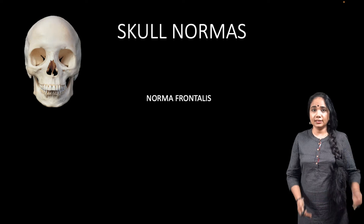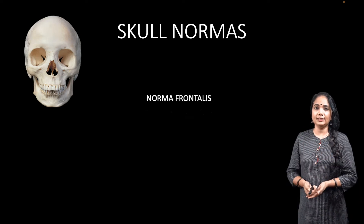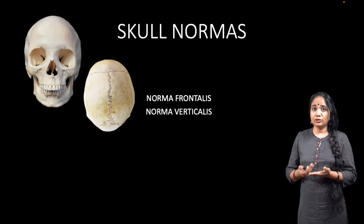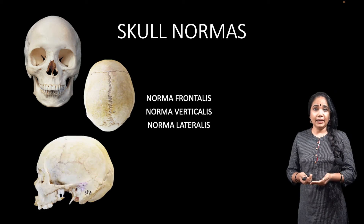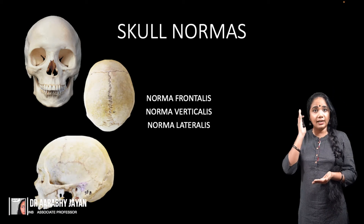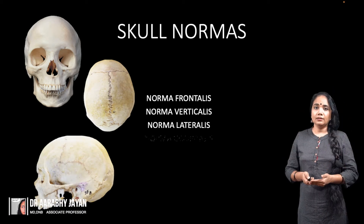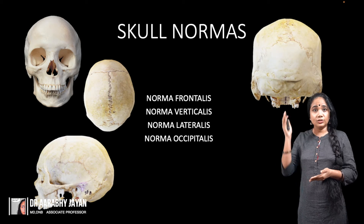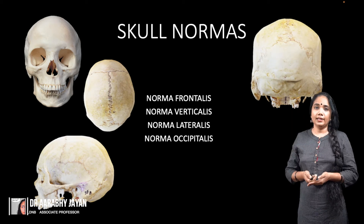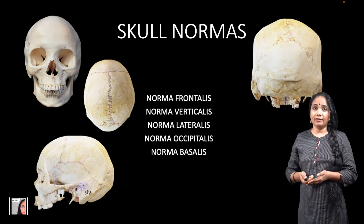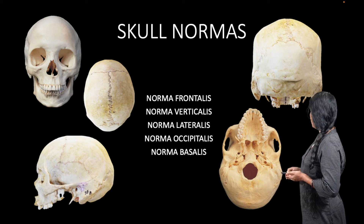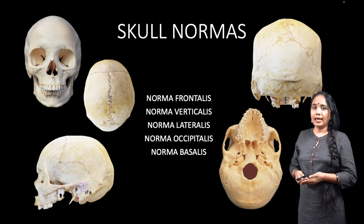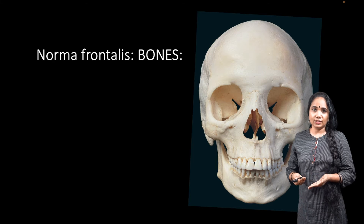The norma frontalis is the view from the front of the face. The norma verticalis is when you study the skull from the top. We have the norma lateralis which allows you to study the skull from the lateral aspects. Then we have the norma occipitalis which gives a posterior view and lastly the norma basalis which allows you to see the skull from below. So these are the five skull normas and let's look at the norma frontalis.